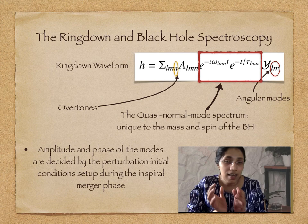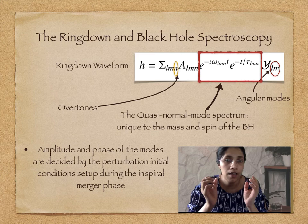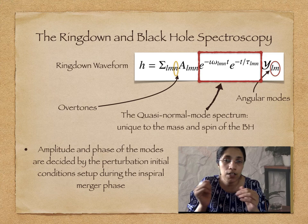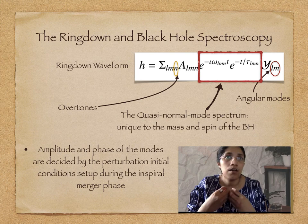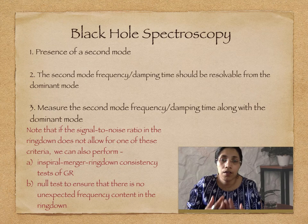There are two kinds of quasi-normal modes. The ones that have different angular dependencies are separated into angular modes and decomposed into the corresponding spheroidal harmonic basis, written as Y_LM in the slide. L and M are the indices used to label these modes, just like in quantum mechanics. And then for each of these angular modes, there are overtones, which are like harmonics, indexed with the index N.